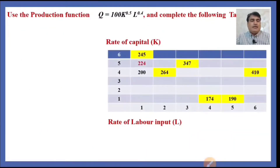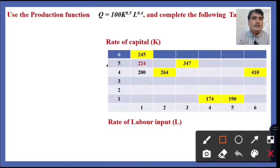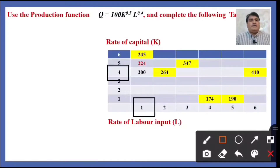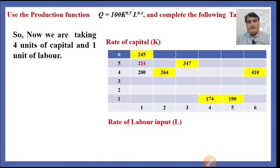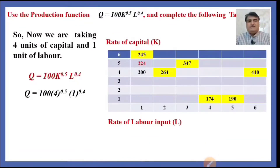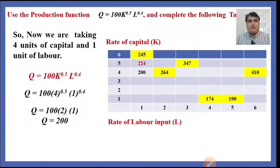By taking 4 units of capital and 1 unit of labor, the producer obtains 200 units of output. We plug 4 units of capital and 1 unit of labor into the same production function, and after solving it we get the output 200.